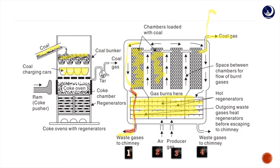The remaining coal in the chambers is then burned, and this process continues — temperature, air, and producer gas are supplied, coal is converted into coke, coal gas is released, and waste gases exit through the chimney. As they pass through the chimney, they leave their heat in the regeneratory bricks, so that preheated temperature is available for the next cycle, reducing the amount of external heat needed.